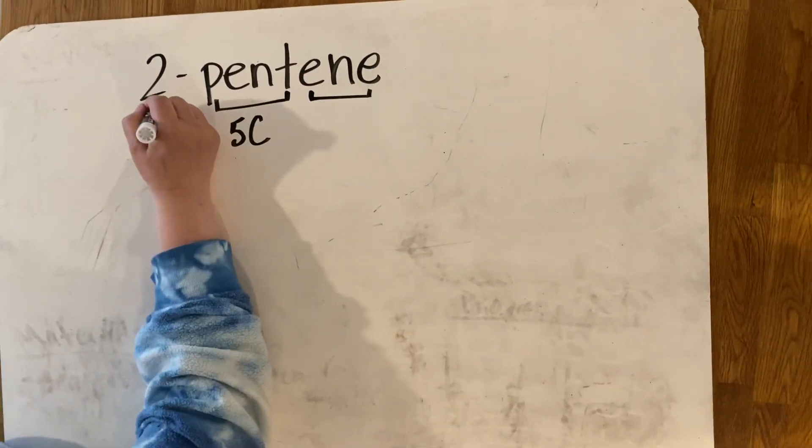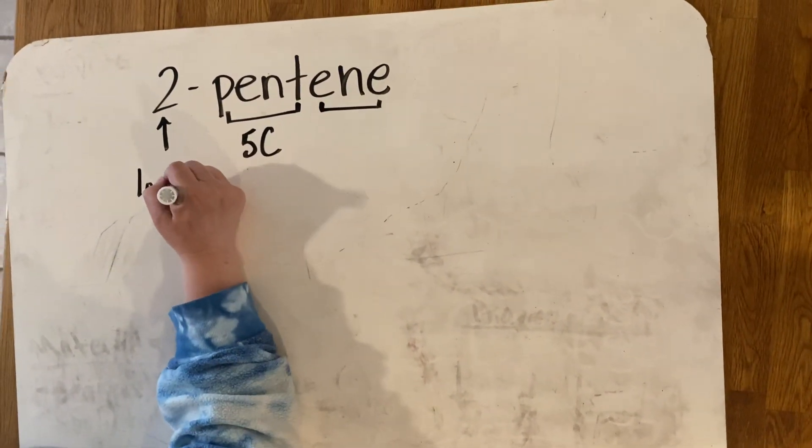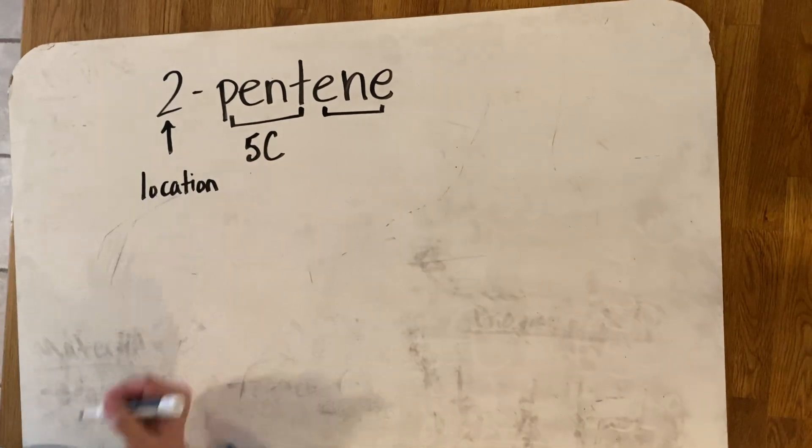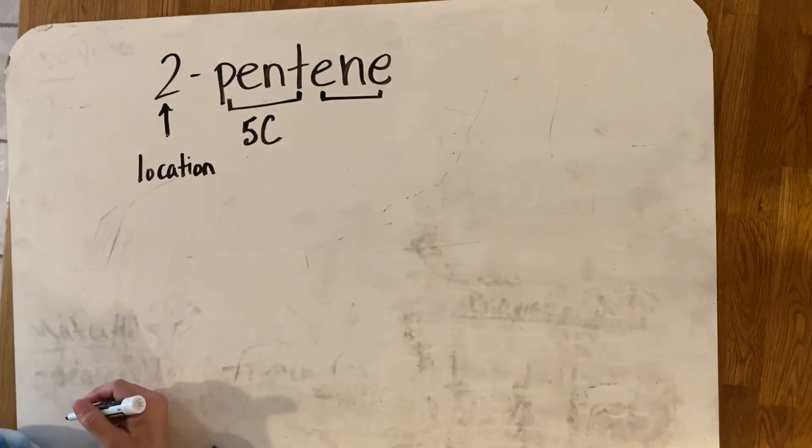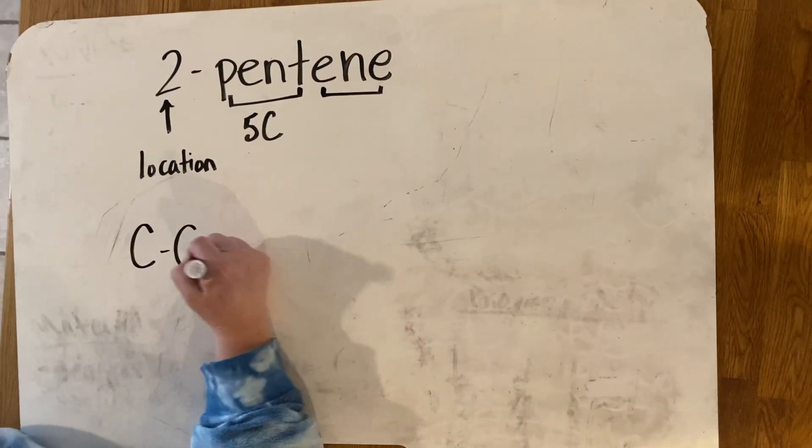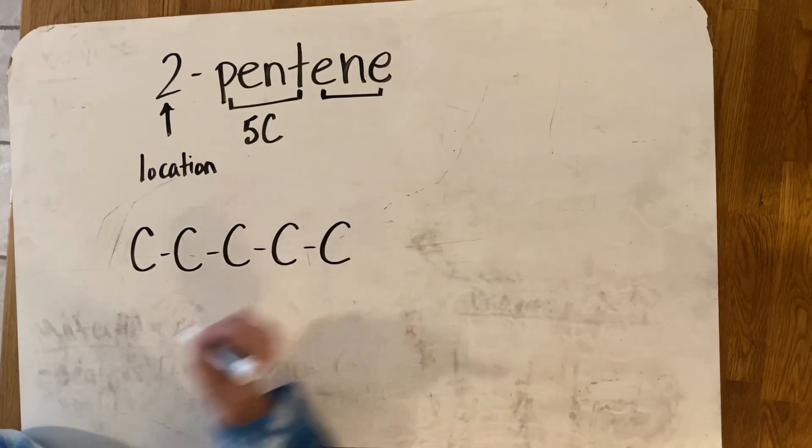So this two is a location. That's a location of the double bond that I know comes from the E-N-E. So if I were to draw a 2-pentene, I would draw my five carbons in a row.